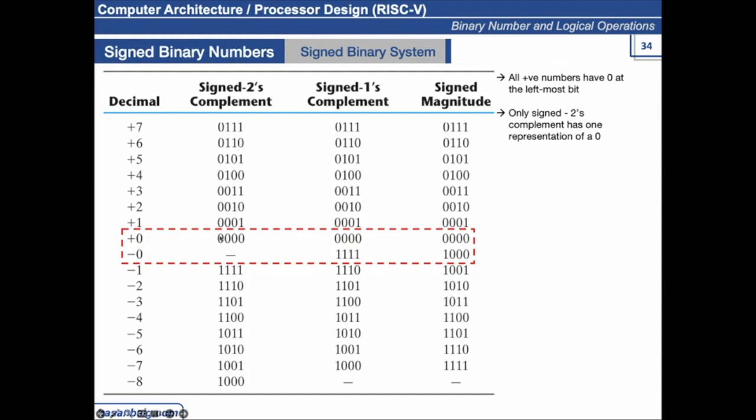Only sign 2's complement is used. If I ask you to take the 2's complement of 0, what would be the 2's complement? It would still be 0 because there is no least significant 1 in the number. It would still be 0.